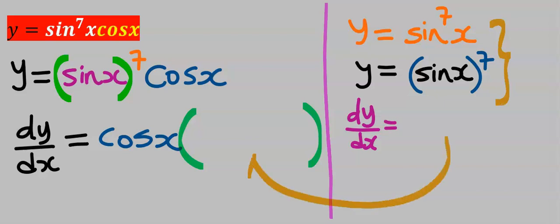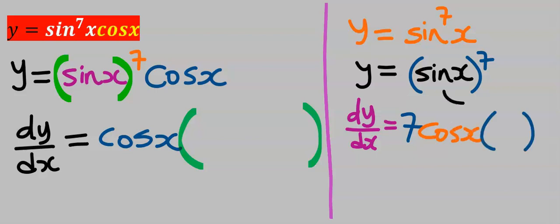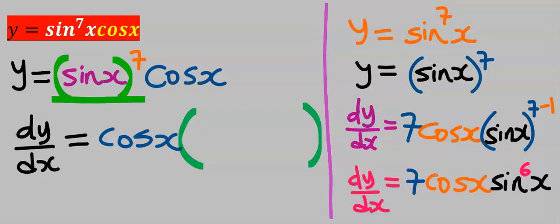By chain rule, this seven will come down. Next I will differentiate sine x and our answer is cos x. Next I will recopy back this sine x. Next this seven will minus one and the derivative is seven cos x sine six x which is going to come in here.